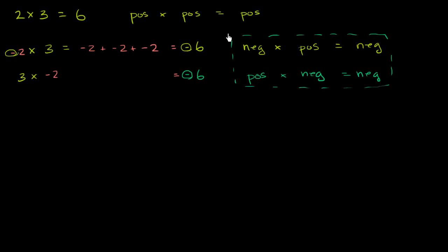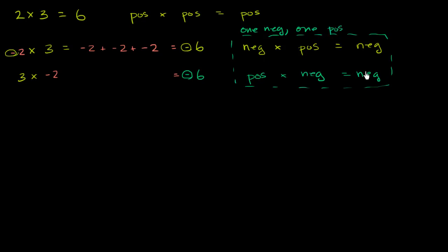Both of these are just the same thing with the order of multiplication switched around. But when exactly one of the two numbers is negative — one negative, one positive — then you will get a negative product.